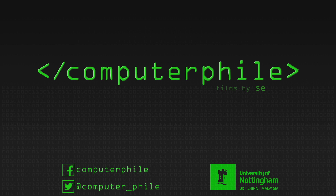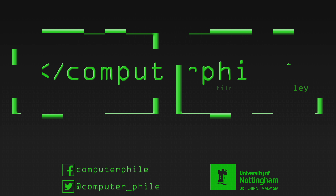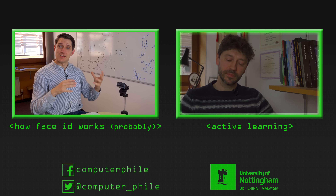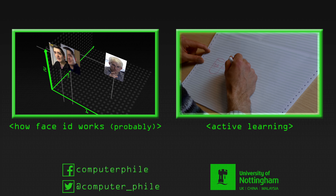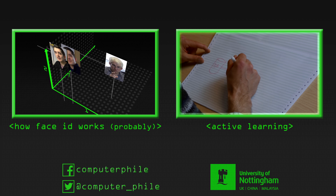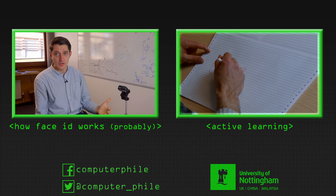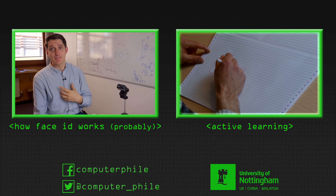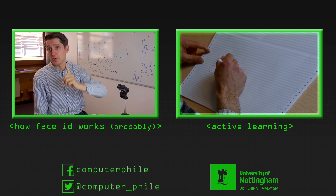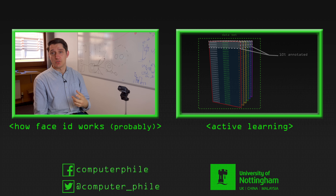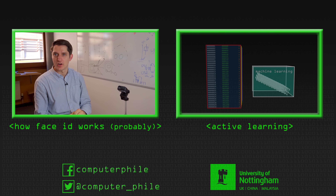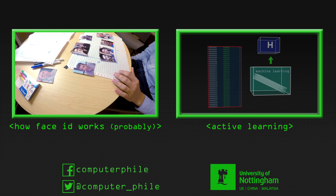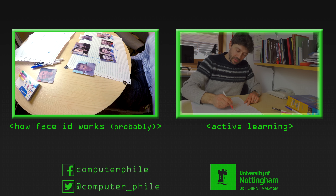Somewhere in this space, when you put my face in I'll appear, and when you put Steve's face in it'll appear somewhere else. This actually solves the one-shot learning problem: how do we convince a phone to let me in having only ever seen one picture of my face when I first calibrated it? The answer is we don't train a neural network to classify — we train a neural network differently.